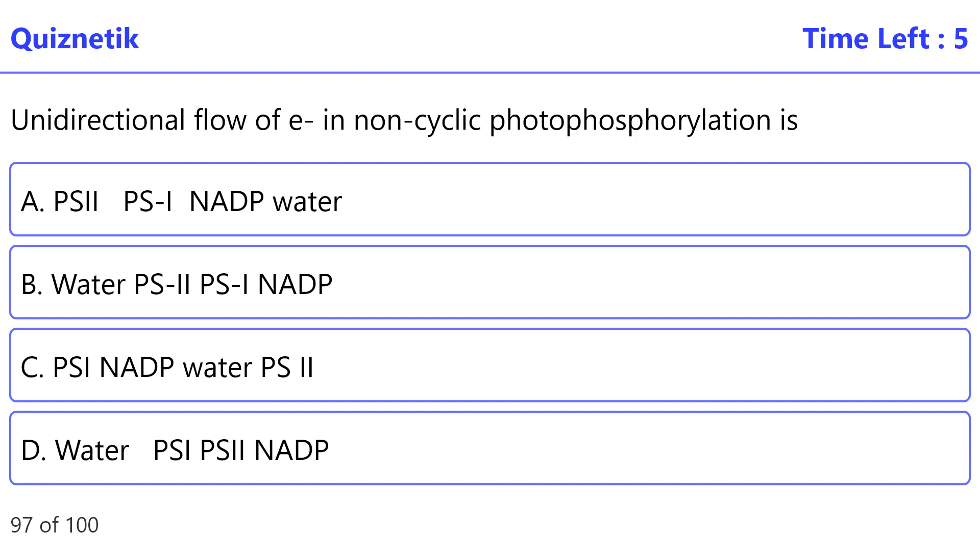Unidirectional flow of electrons in non-cyclic photophosphorylation is - the correct option is B: water, PS-II, PS-I, NADP.